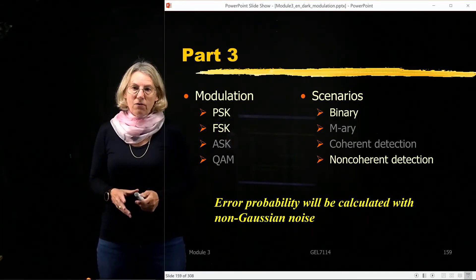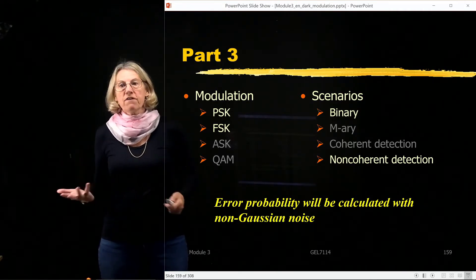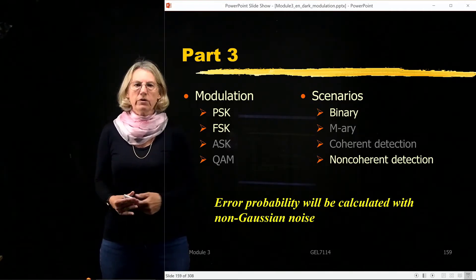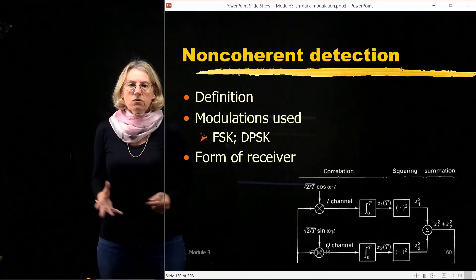So again, we're only going to look at PSK and FSK, and we're only going to consider the binary case. What I'd like to do now is just convince you what gets complicated when we don't know the phase, when we try to save money, when we try to use non-coherent detection.